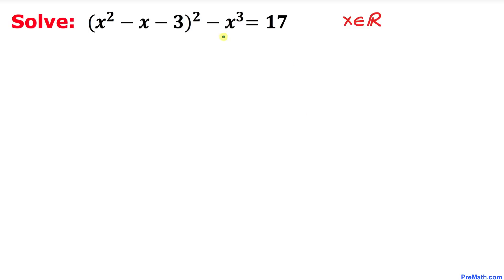Welcome to Pre-Math. In this video tutorial we are going to solve this given equation: x squared minus (x minus 3) squared minus x cubed equal to 17, where x are real numbers. So let's go ahead and get started with the solution.